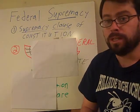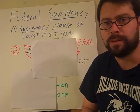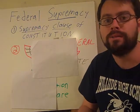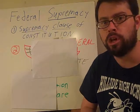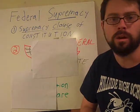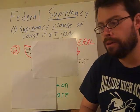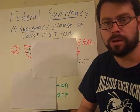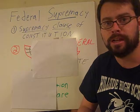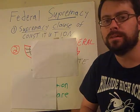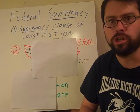Ultimately, the federal government does have more authority than state governments. If there is ever a conflict between state and local and national laws, national law will trump state and local law. But this hasn't always been easy. We're going to look at the meaning of this and why we set it up this way, and also at some examples of conflict between states and the national government.